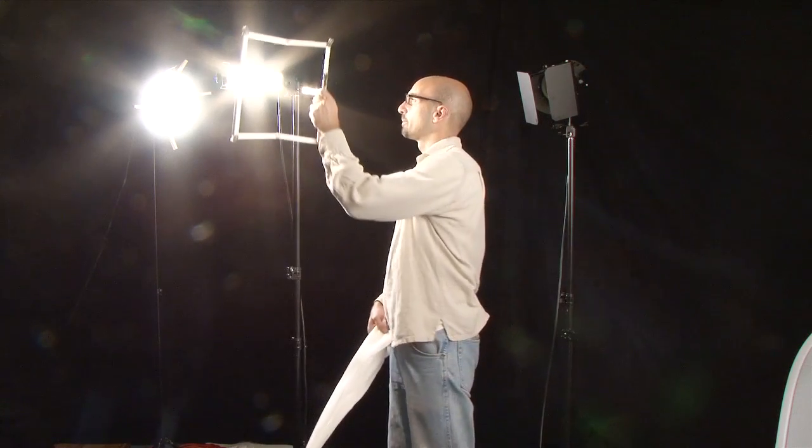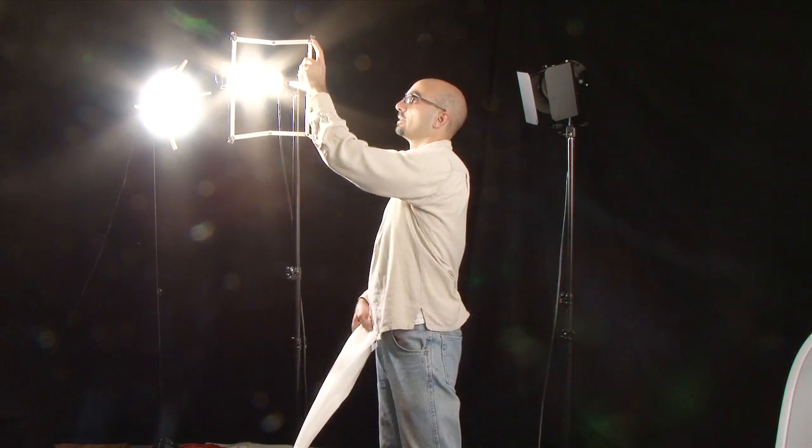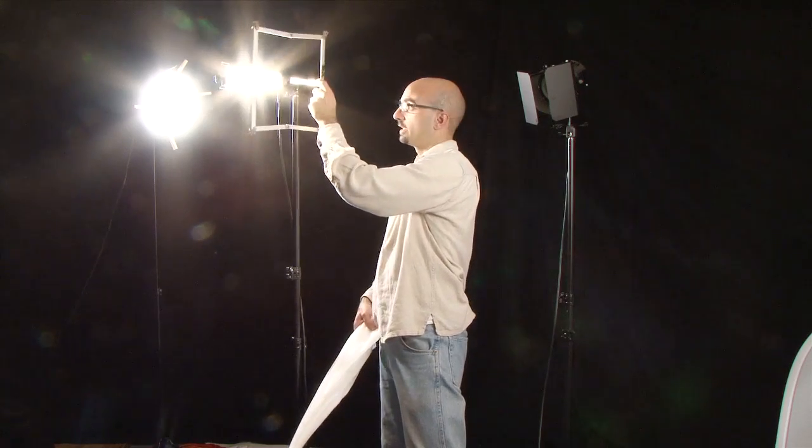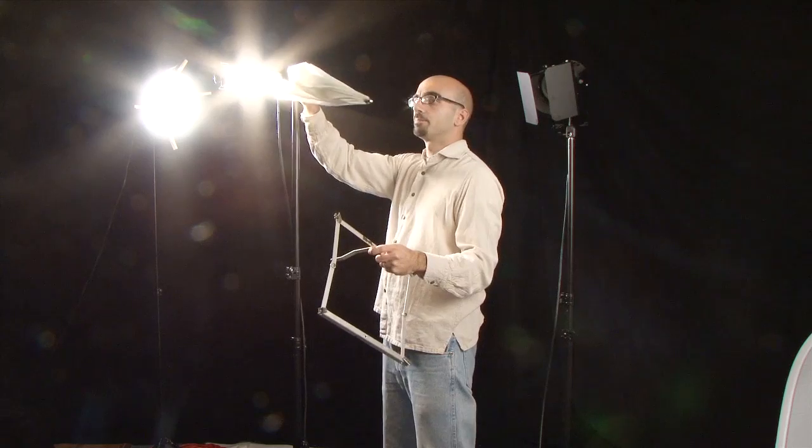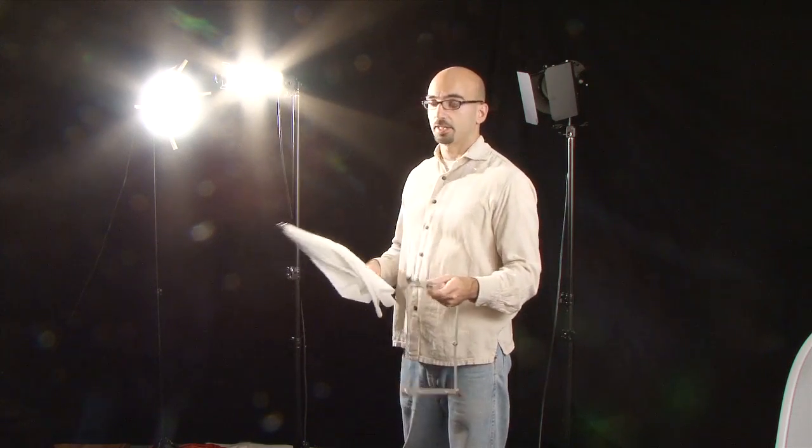You can get a little frame like this, which has little clips on here that you can put your gel on. It has a hole for an umbrella. You can put an umbrella right in here, and you can also buy a speed ring to put a soft box right on this kind of lamp.